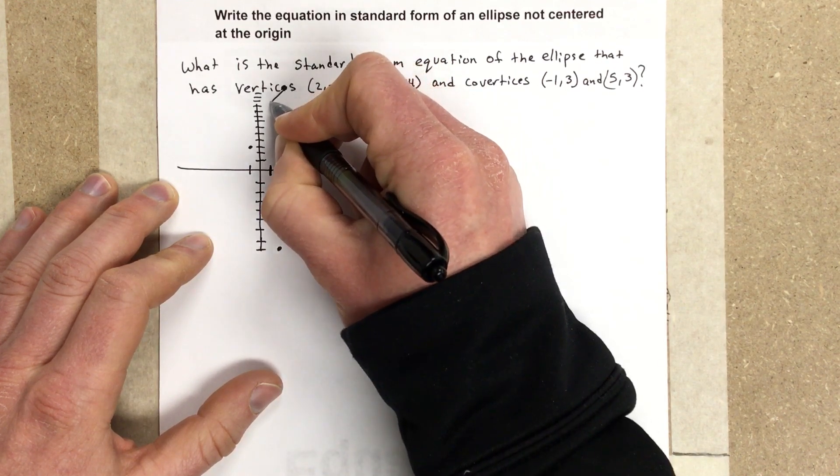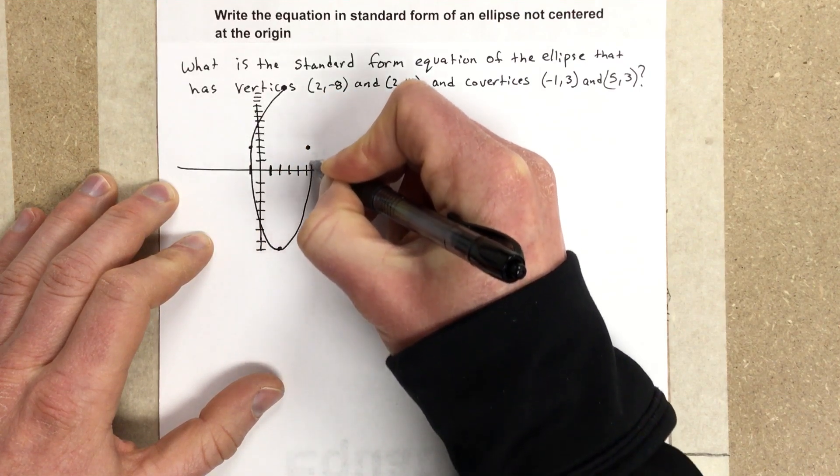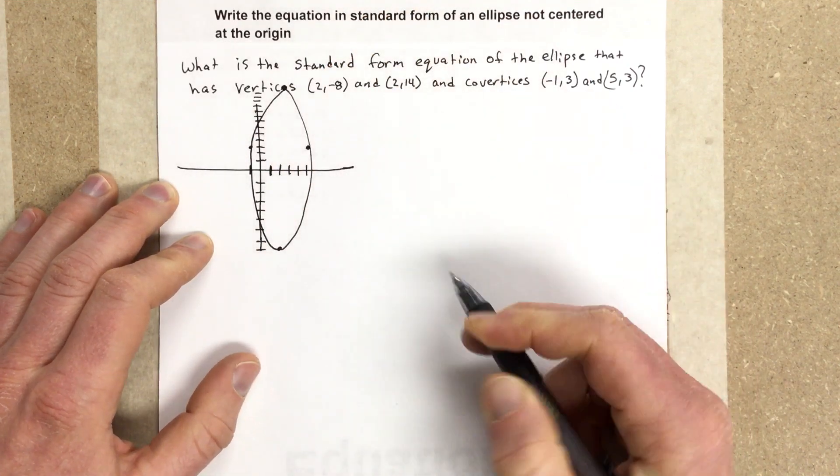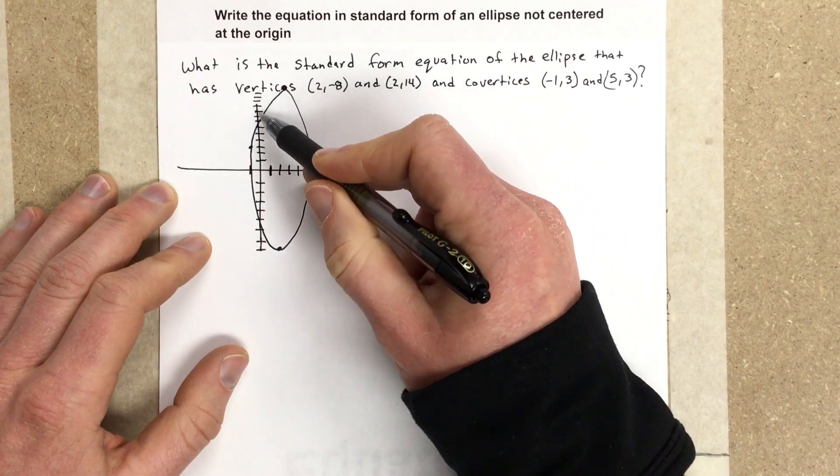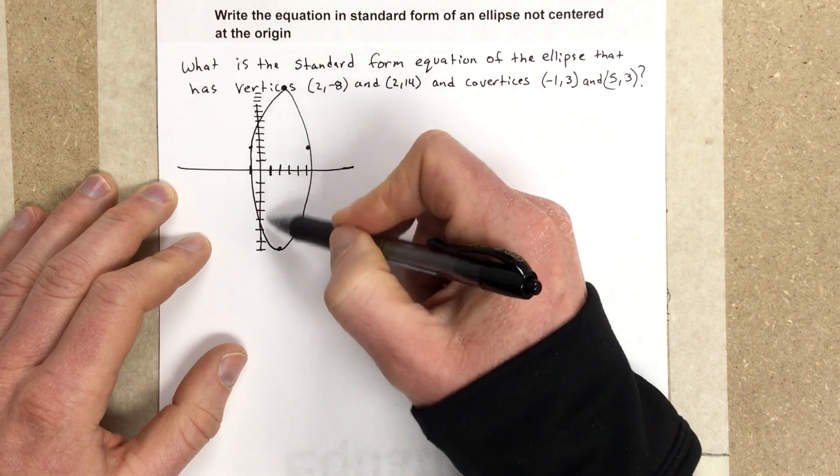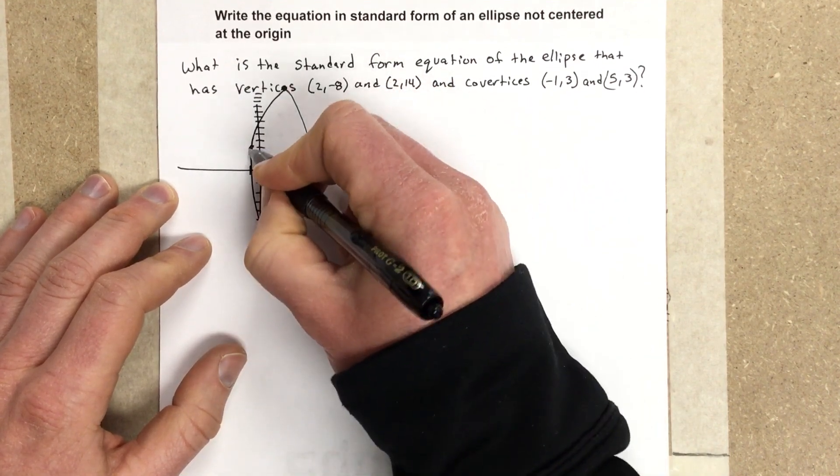So we can draw this ellipse that we have right here. Now it's a little off because I started to make these much tighter than these dots down here, but this would be right in the center of the ellipse if it was drawn correctly.